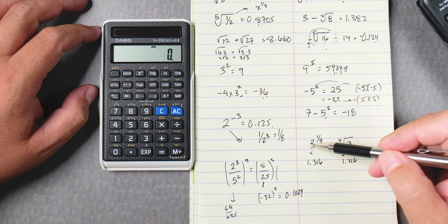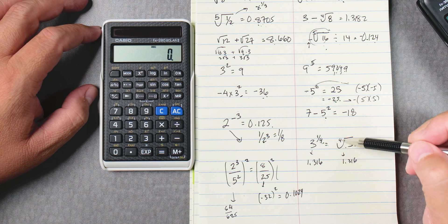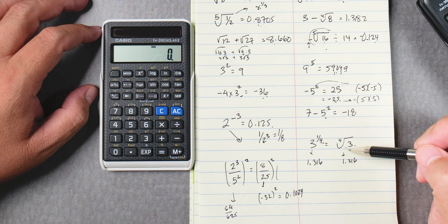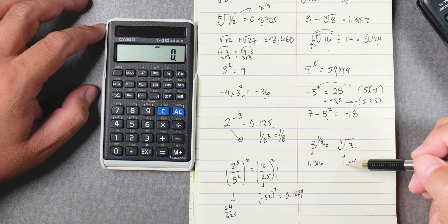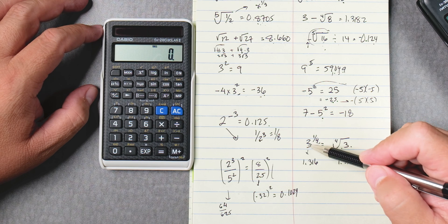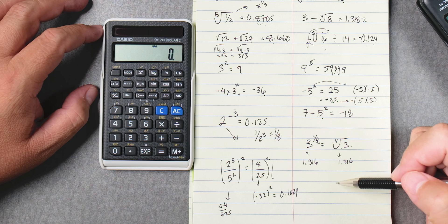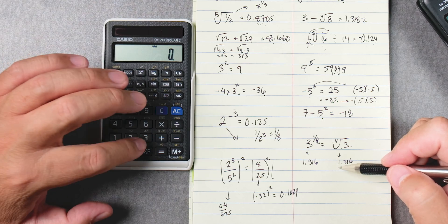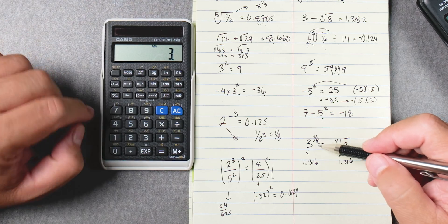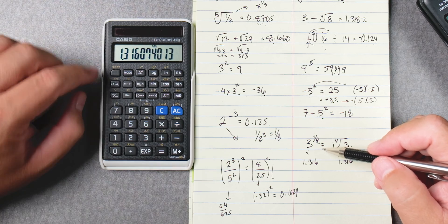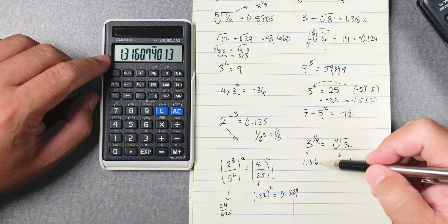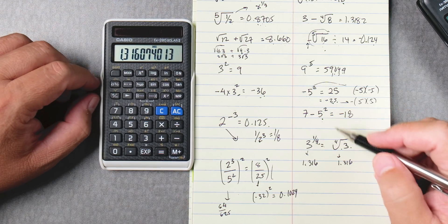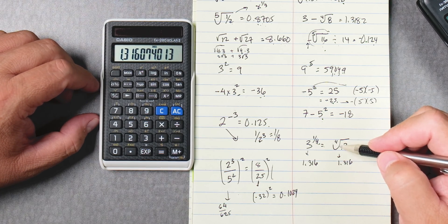So the next one is three to the one fourth power which is equivalent to the fourth root of three. These are equivalent, this one is an exponent, this one's a root, and this is why we study both of these subjects at the same time. So let's do this one, three to the one over fourth power, because this index of four is the denominator. So we say three shift x to the y and we're going to type four equals, 1.316.